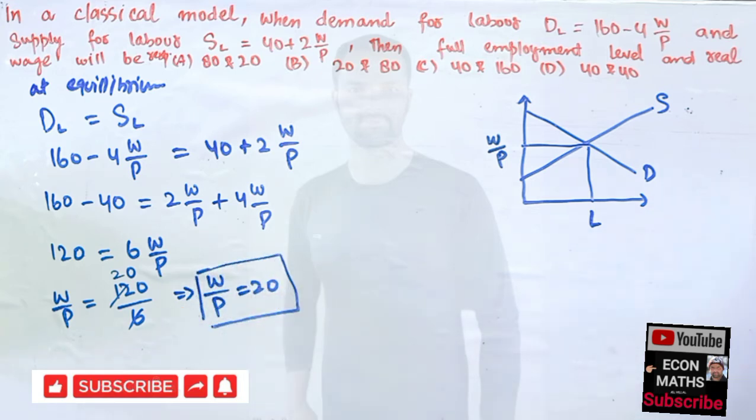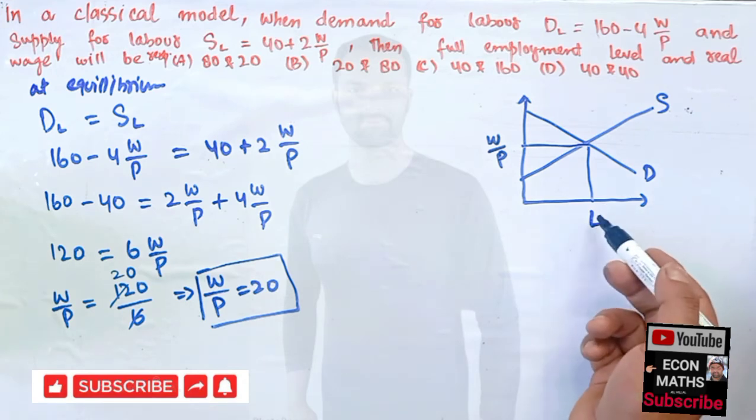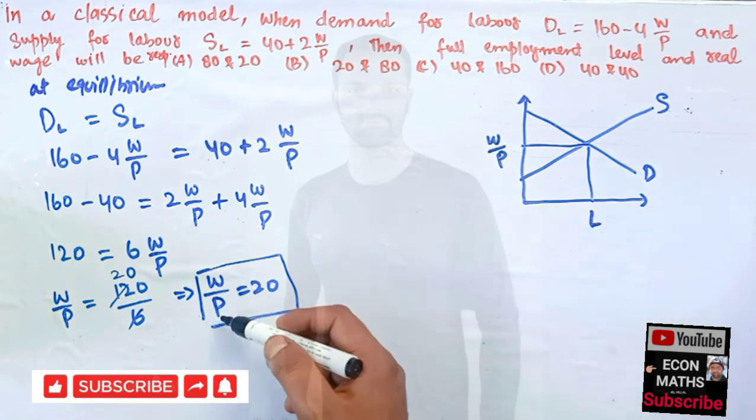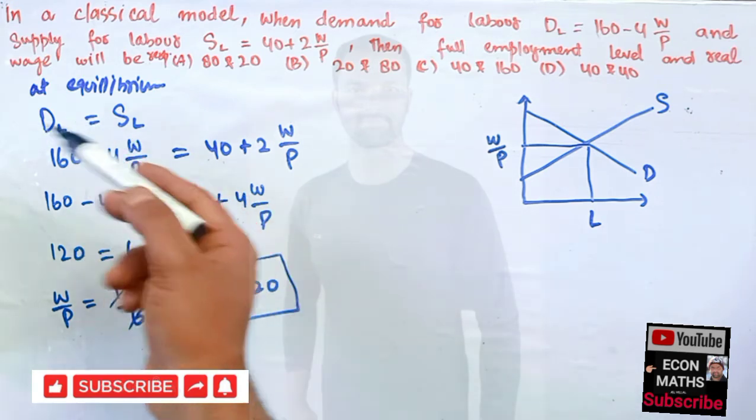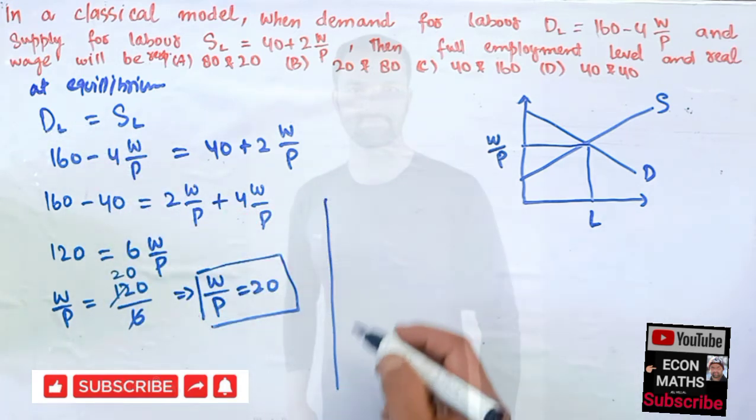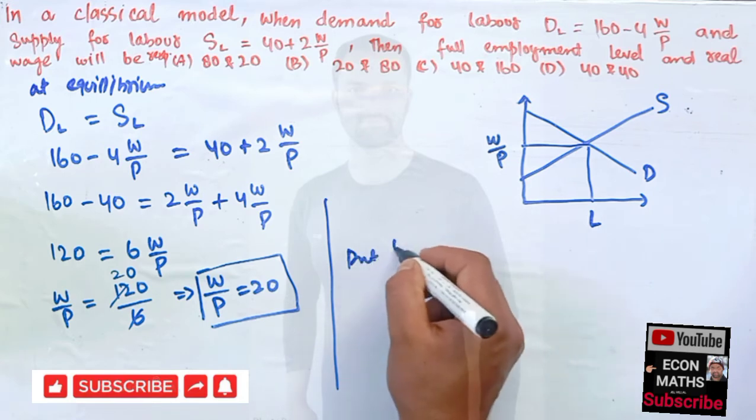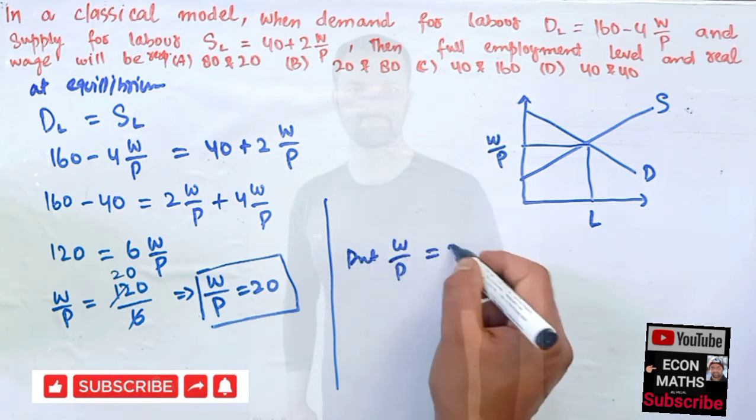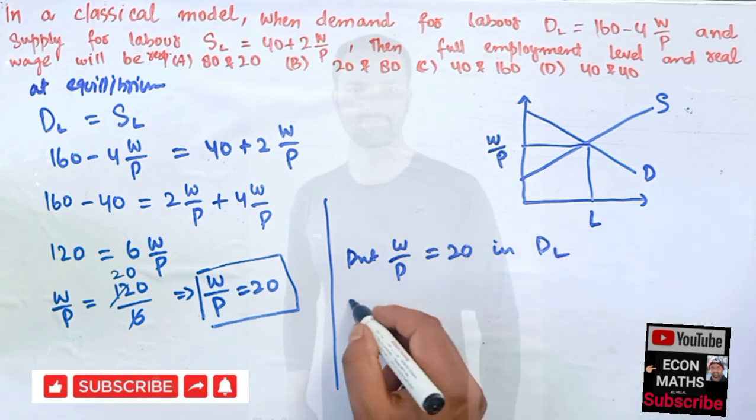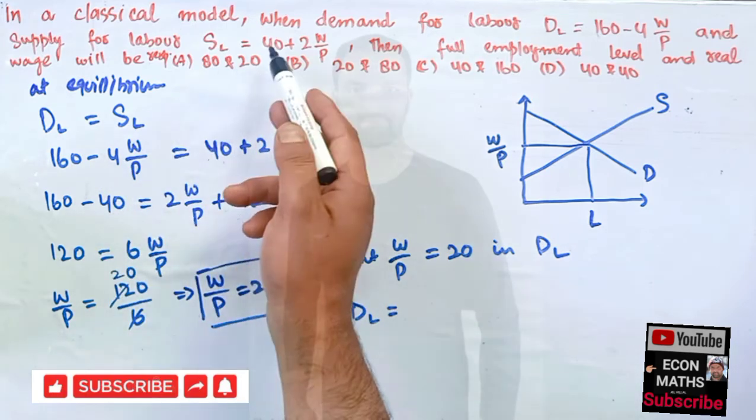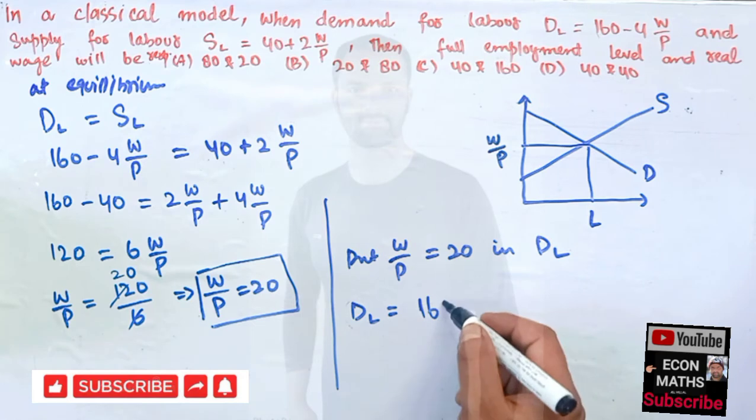Now what would be our equilibrium level of labor? Just plug W/P = 20 either in demand for labor or in supply function. Put W/P = 20 in the demand for labor function. Demand for labor is given as 160 minus...